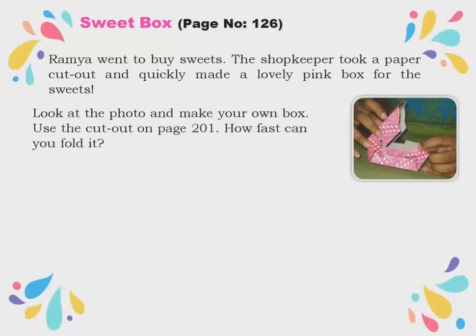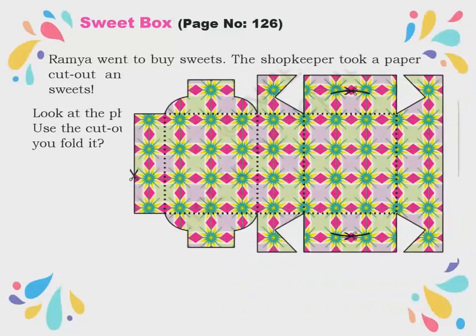They are asking us also to make the box. You can make the box by using the cutout on page number 201, the last page, and see how fast you can fold it. Either you cut it from that page and fold it, or wherever dotted lines are given, those are the folding lines — you fold along those. Only at certain places do you make cuts; the remaining dotted lines are for folding. Or you trace it out on a cardboard and then fold it. Each and every child should do this.